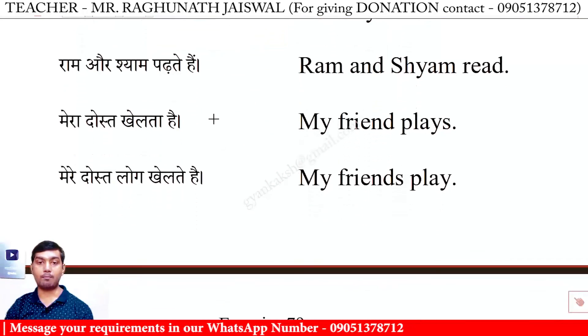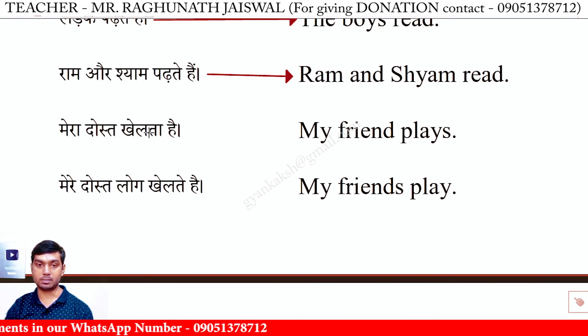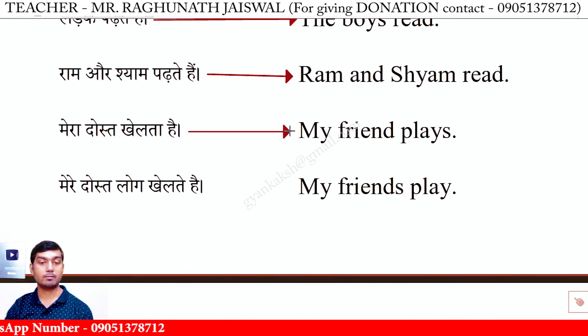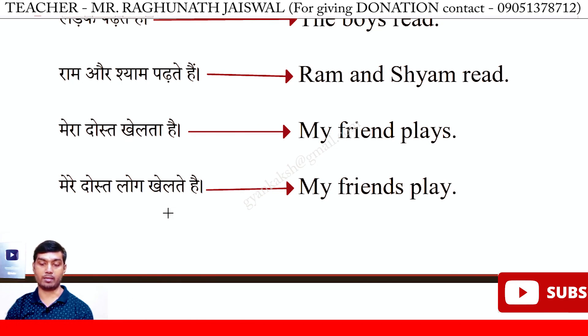राम और श्याम पढ़ते हैं — Ram and Shyam read. मेरा दोस्त खेलता है — My friend plays. मेरे दोस्त लोग खेलते हैं — My friends play. ठीक है।